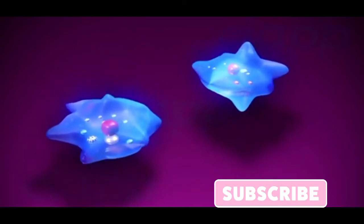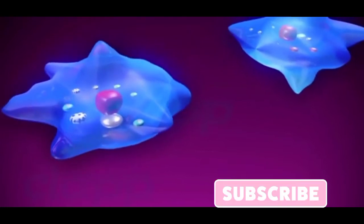Thus, two daughter amoebae are produced from a single parent. One of them has the original contractile vacuole while the other develops a new one.